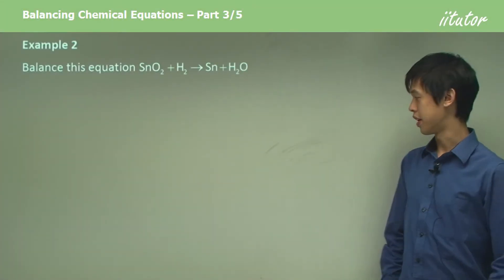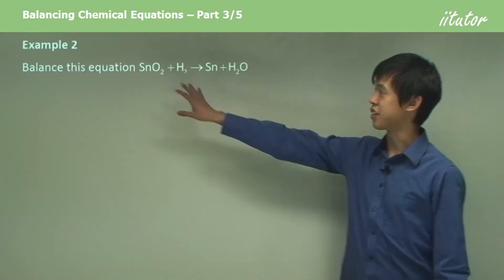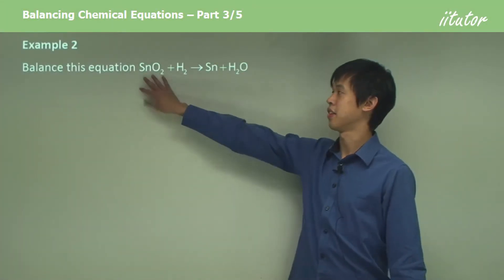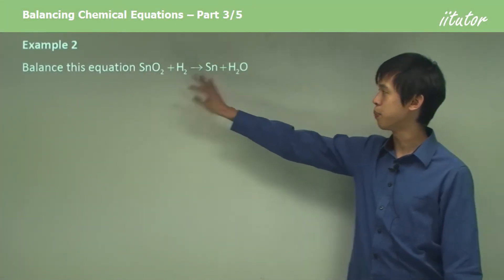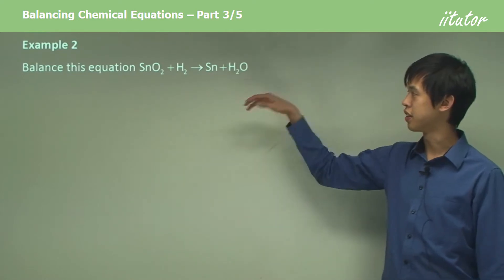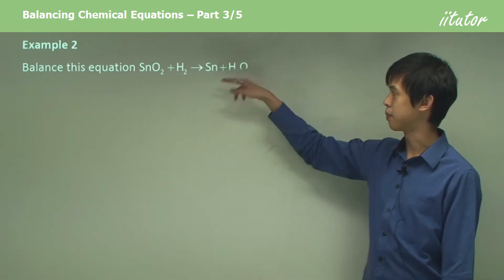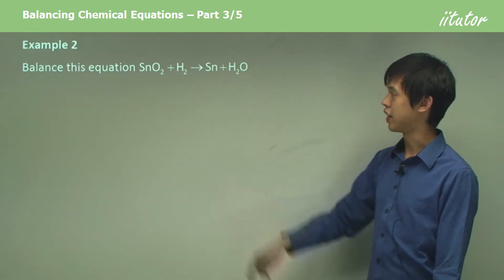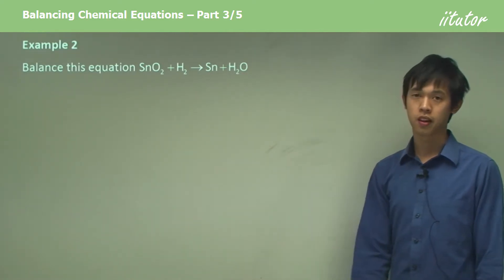Example two. Balance this equation: SnO2 plus H2 gives you Sn plus H2O.